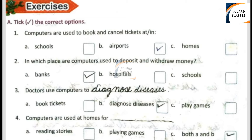Number 2: In which place are computers used to deposit and withdraw money? Option A: Banks. Option B: Hospitals. Option C: Schools. Option A, Banks, is the right answer.